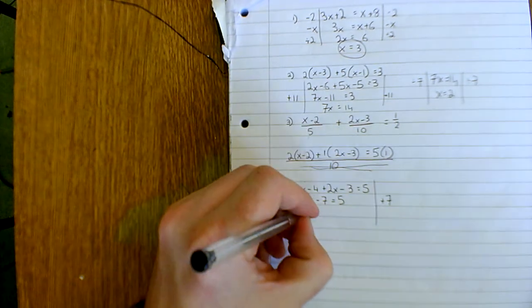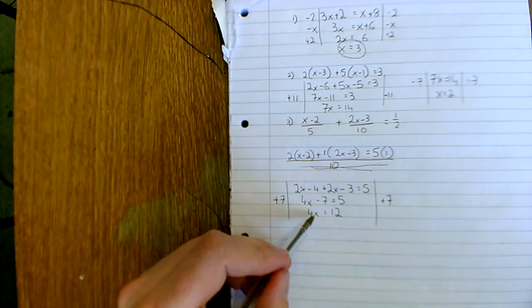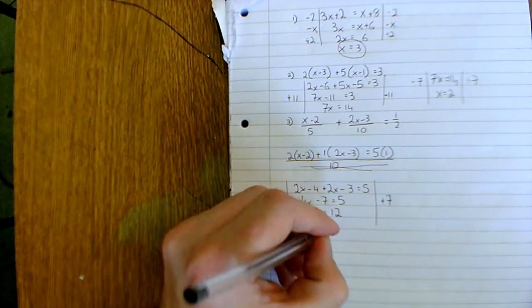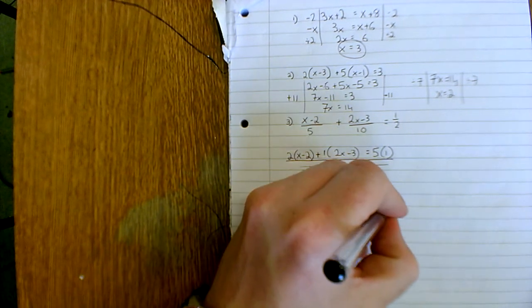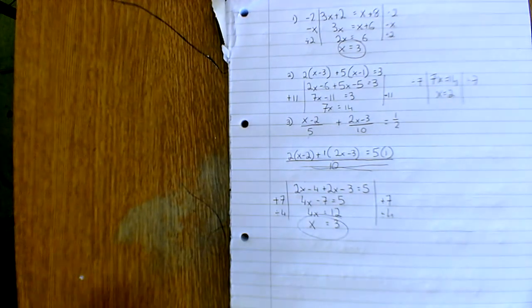Do it to both sides. 4x equals 5 plus 7, 12. So 4x is 12. So if I divide by 4, I just get what x is. I do the same on the other side. 12 by 4 is 3, so x is 3. Okay, I hope that makes sense.